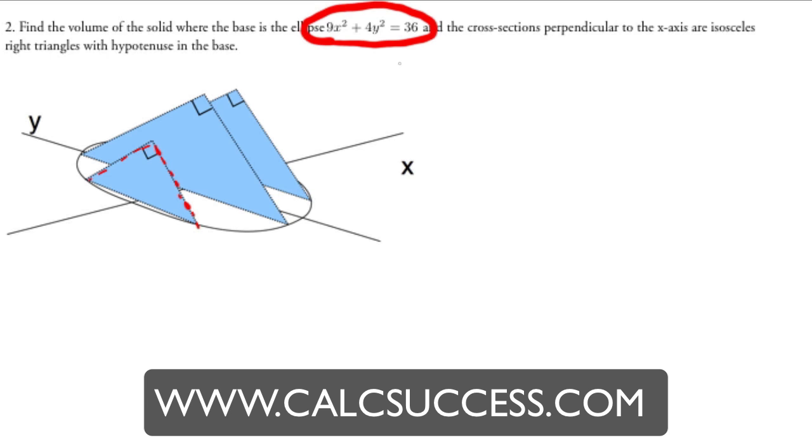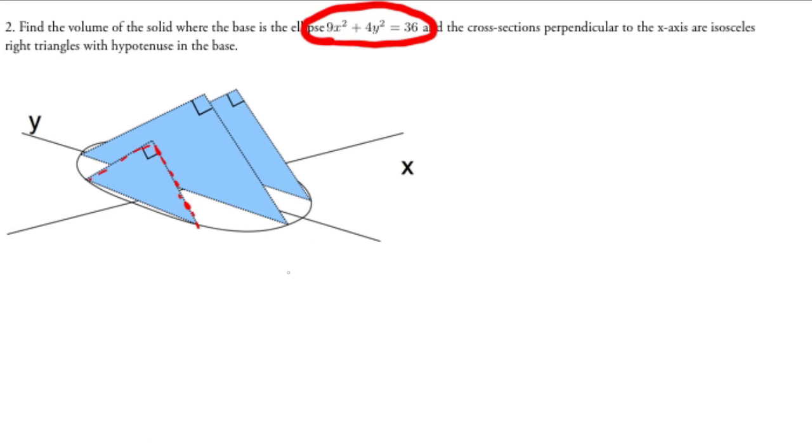This is the equation of the ellipse, and so we'll use that. Because we're integrating, because it's perpendicular to the x-axis, then we're going to be integrating in this direction. So we're going to integrate with respect to x. That's important to know because when we're formulating our cross sections, we need to have them with respect to x.